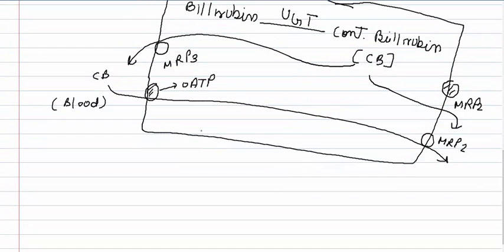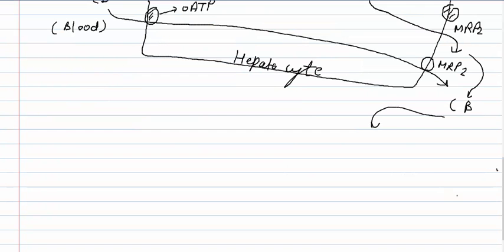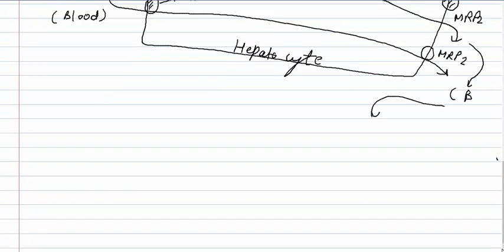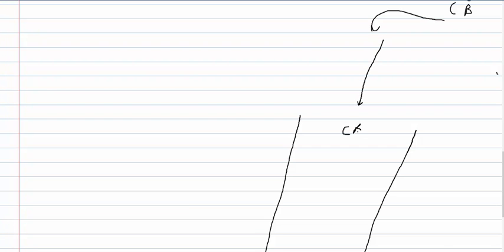After entering into the intestine, we will look at the further conversion of this conjugated bilirubin product inside the intestine. The conjugated bilirubin is now in the intestine.